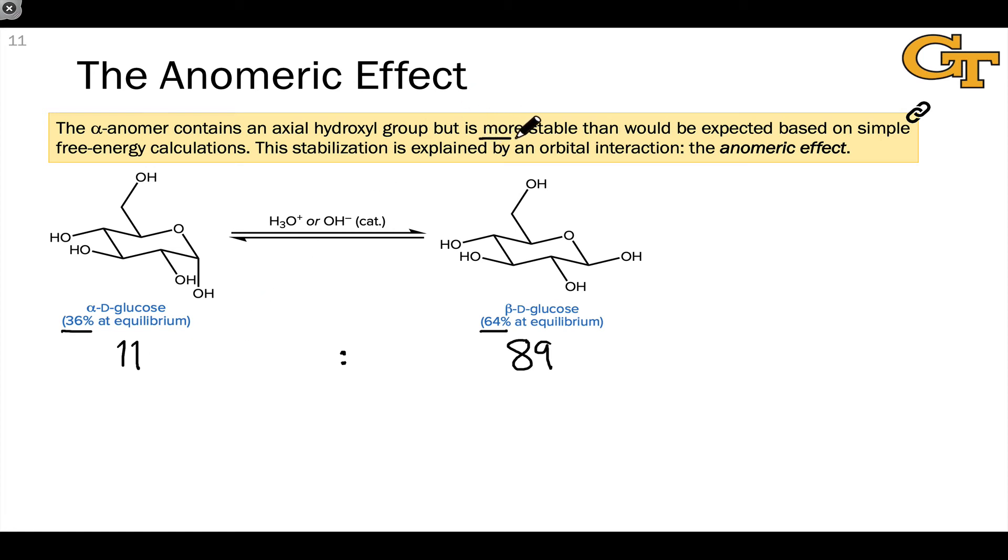The additional stabilization is explained by an orbital interaction that exists in the alpha anomer but not in the beta anomer, called the anomeric effect. The oxygen within the ring has a non-bonding lone pair in a pseudo-axial position. That axial lone pair is well aligned to overlap with the sigma star antibonding orbital of the C-O bond.